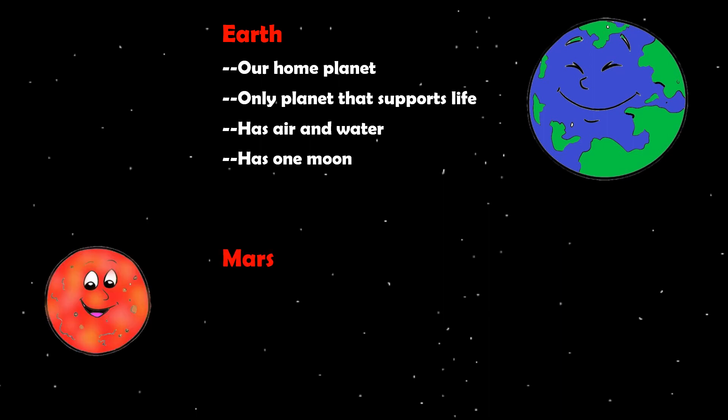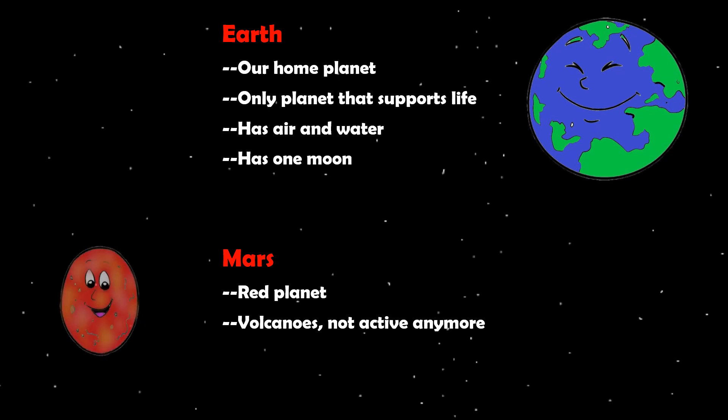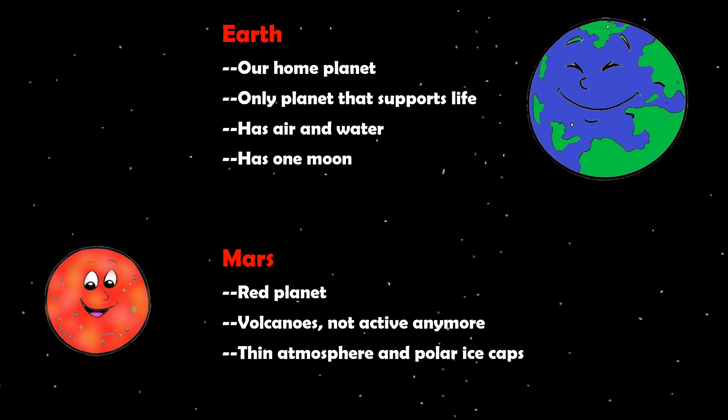Mars is the fourth planet from the Sun. It is also called Red Planet, as its soil contains rusty iron. It has volcanoes, which are not active anymore. It has a thin atmosphere and polar ice caps. It has two moons, which are named Phobos and Deimos.